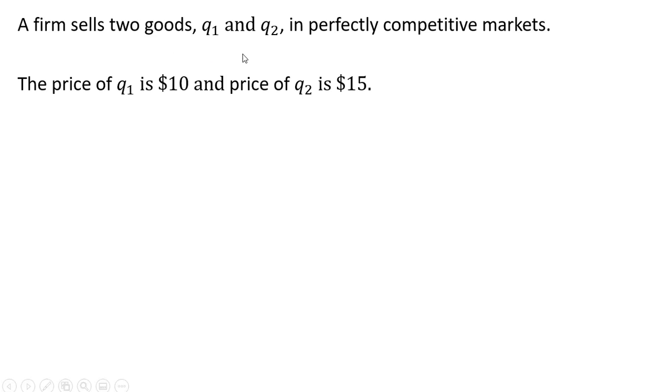A firm sells two goods, Good 1 and Good 2, in perfectly competitive markets. The price of Good 1 is $10 and the price of Good 2 is $15.